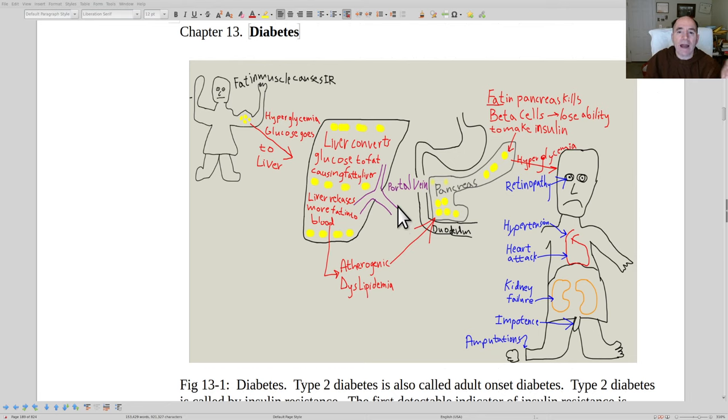Gerald Shulman won the Banting Award as the Best Diabetes Researcher in the World in 2018, and you can watch his lecture. It's available for free on YouTube. And the other guy, Roy Taylor, he won the Banting Award, Best Diabetes Researcher in the World 2012. And he has lectures available for free on diabetes. They're very good. Both of them are excellent.